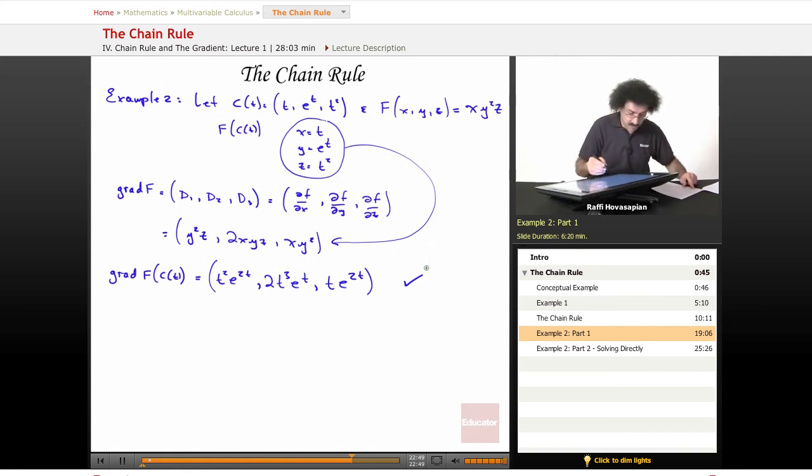Now I just have to find C'(t). Well that's really simple. C'(t). Well, here's my C right here. I'll just take the derivative of each one. The derivative of t is 1. The derivative of e^t is e^t. And the derivative of t² is 2t.